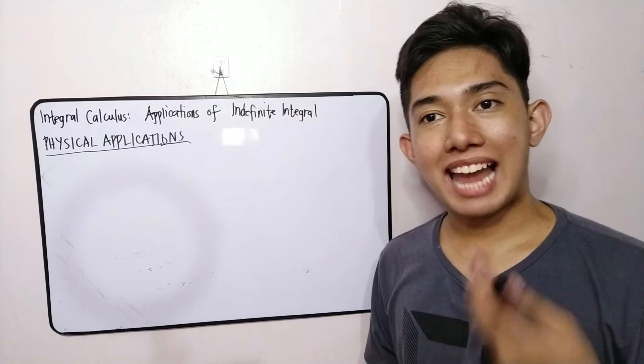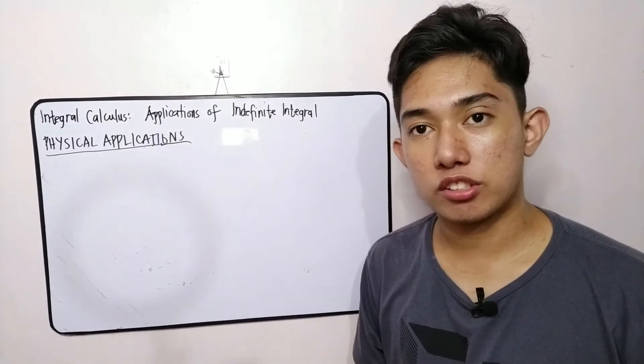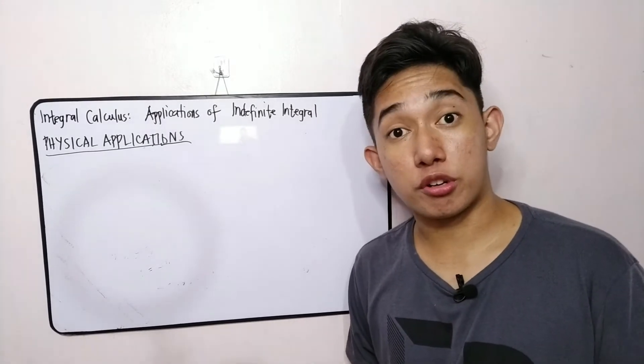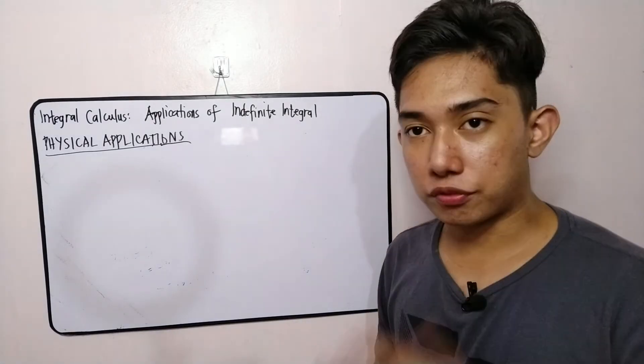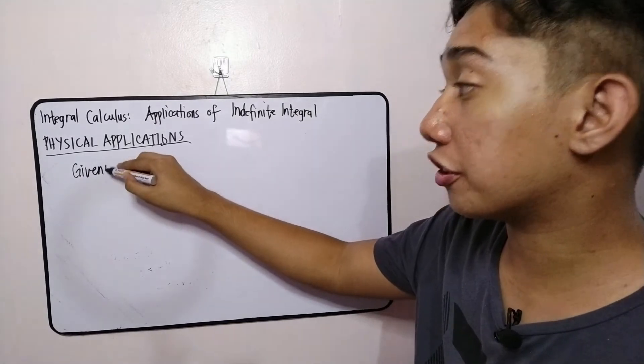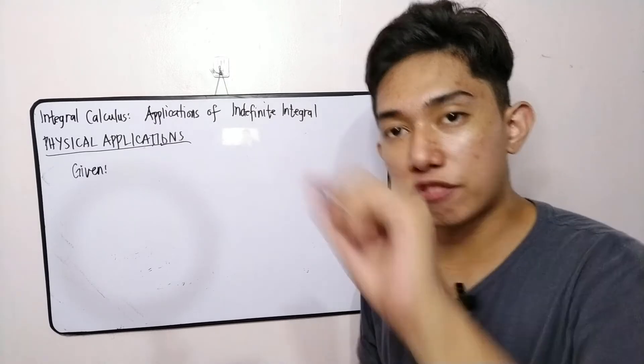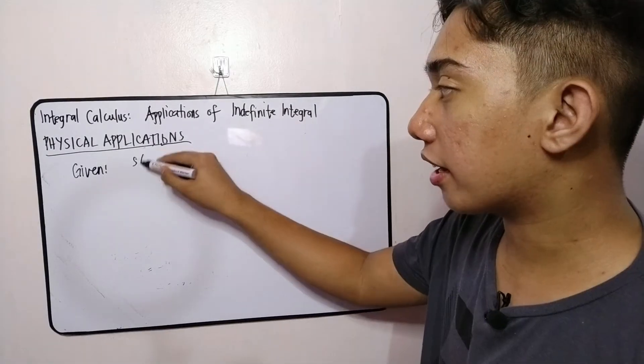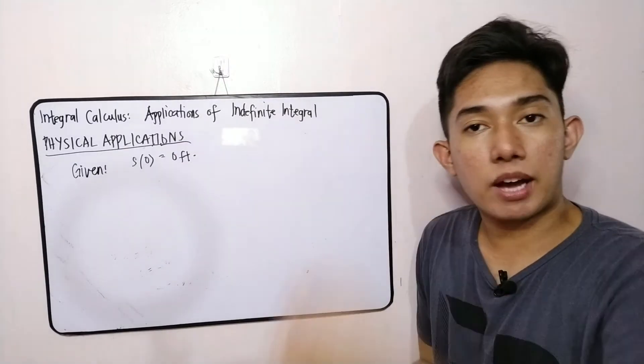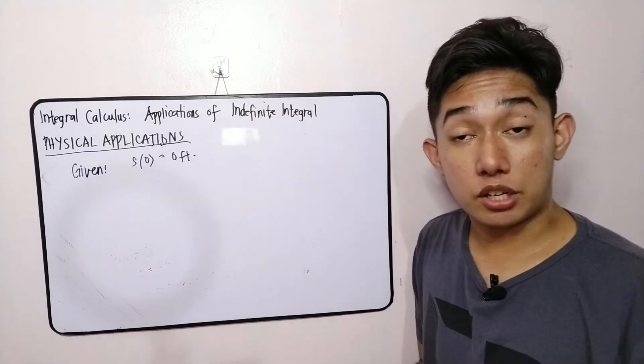For our last problem, it was stated that familiar problem kasi it's because it is thrown vertically upward. So therefore, we are pertaining to a free fall motion. So lots of terms that will be discussed here. So given, first, we read first, the first line, in which the body is thrown vertically upward from the ground. So when we say from the ground, alam na natin, meron tayong keyword diyan. And that pertains to, as the body started from rest, or from the ground, therefore, its displacement is zero foot.